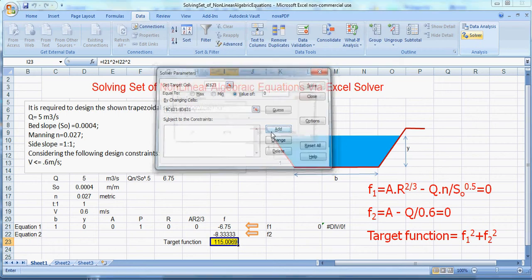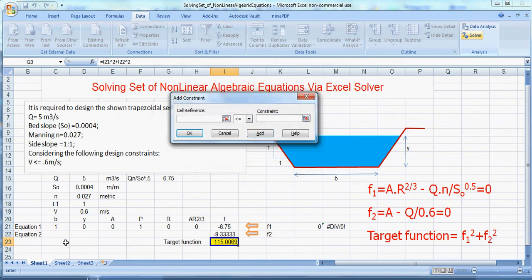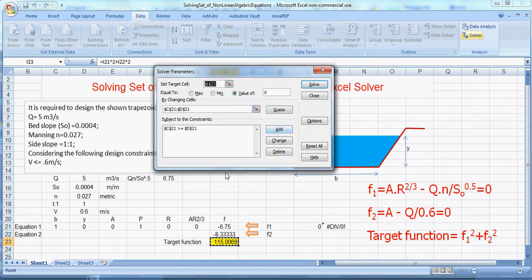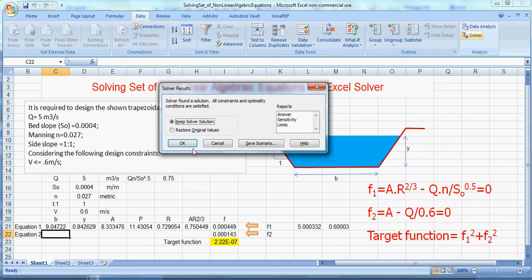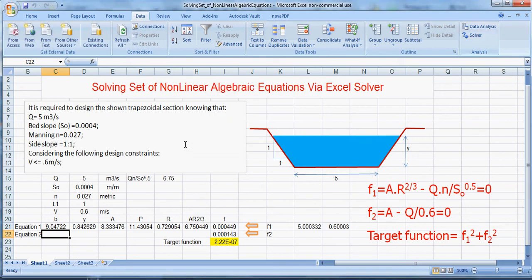So let us add here a constraint, and the constraint that I will add: I will make this B greater than or equal to the water depth. And I believe this will solve the problem. So by doing so, let us solve again, and here we got the right answer. Thank you.